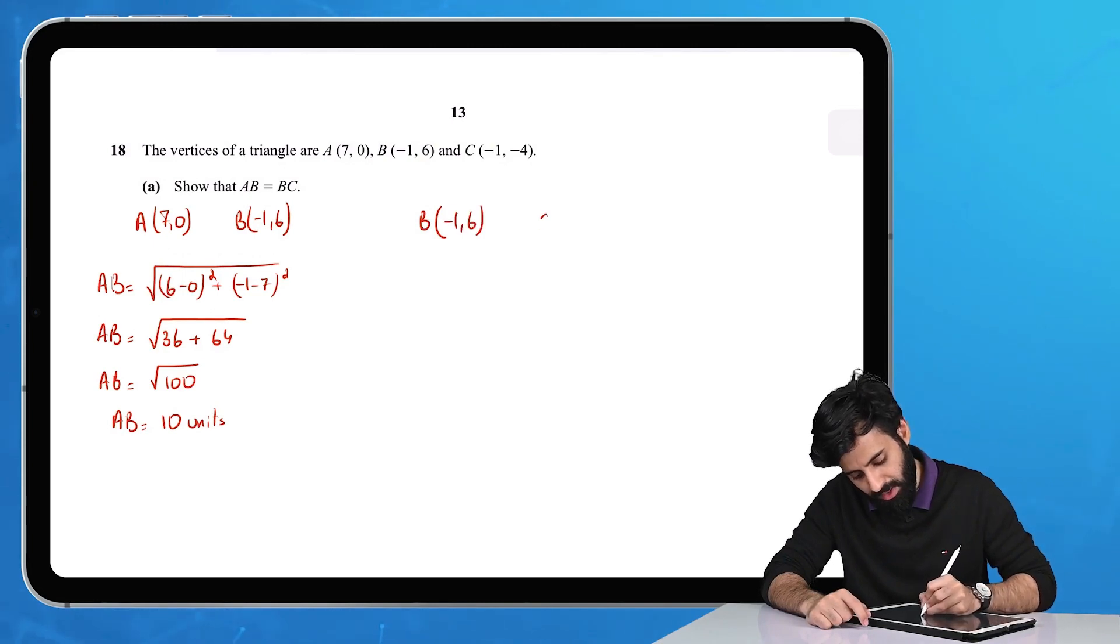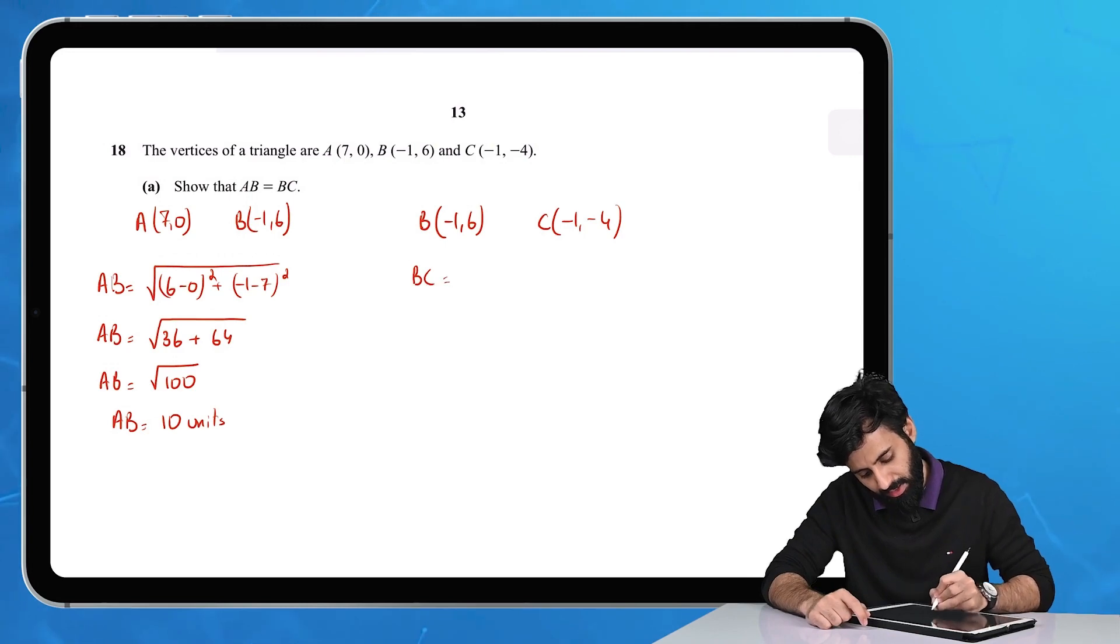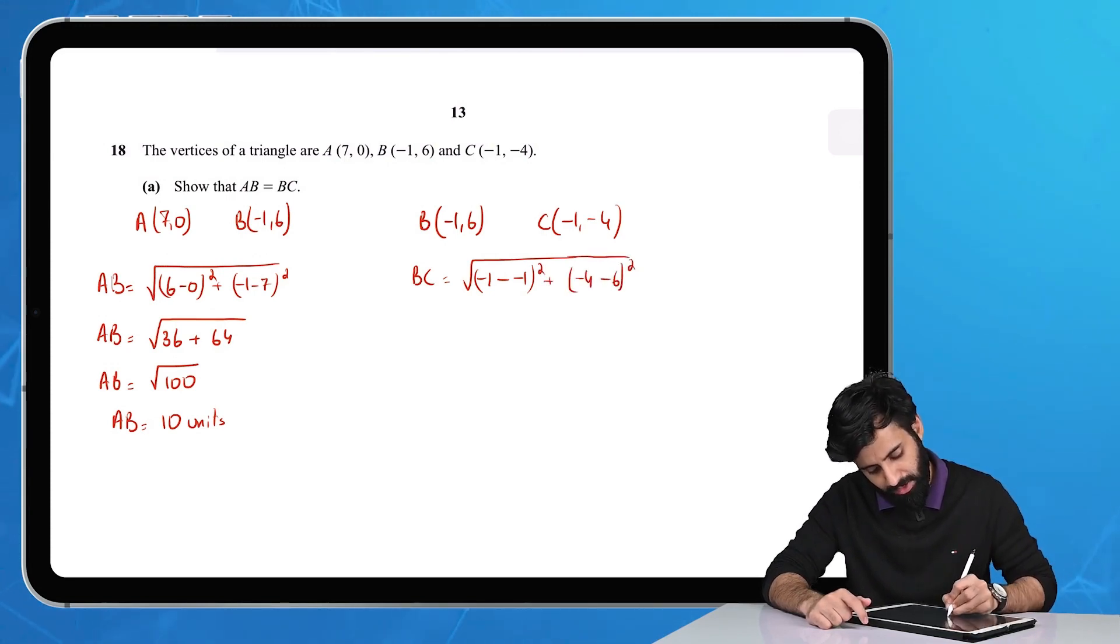Now let's write down the coordinates of B(-1,6) and C(-1,-4). Let's find their length. That means we're looking at √[(-1-(-1))² + (-4-6)²].